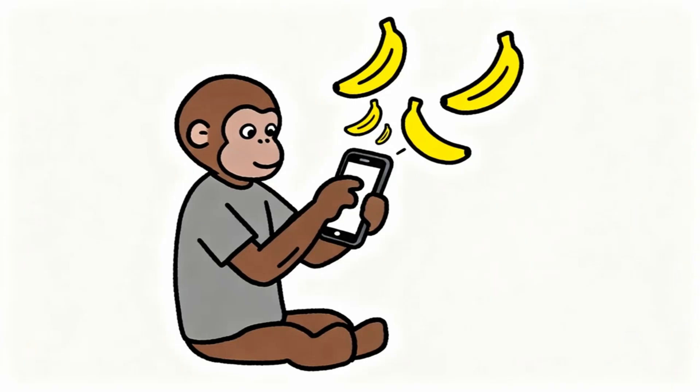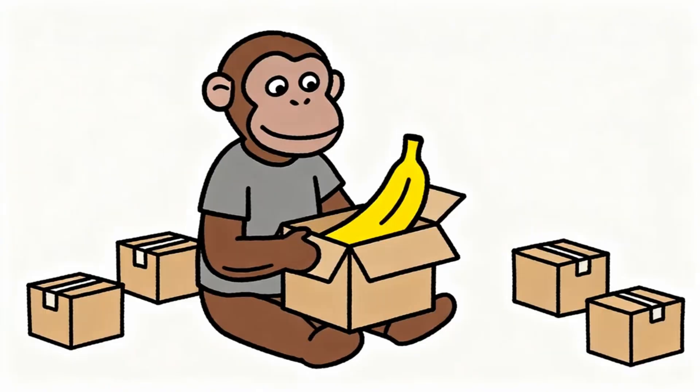Technology companies discovered how to hack monkey brain by creating artificial dopamine bananas that require zero effort. Social media notifications are dopamine bananas. Video game achievements are dopamine bananas. Online shopping purchases are dopamine bananas. Streaming service binges are dopamine bananas. All designed to be as easy as possible to obtain.